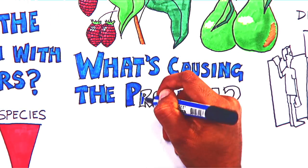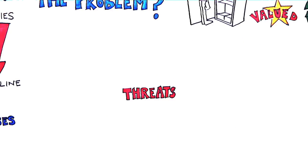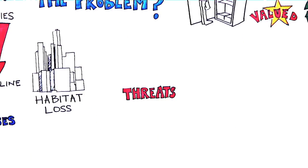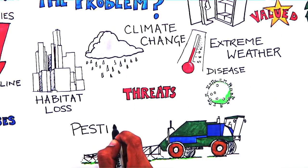What's causing the problem? We know that pollinators face many threats, including habitat loss, disease, extreme weather, climate change, and the use of some pesticides.